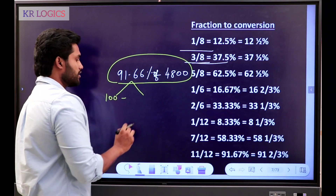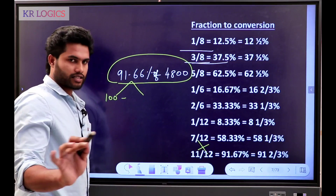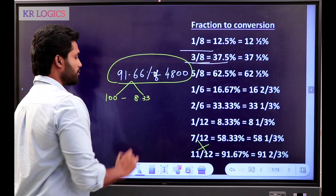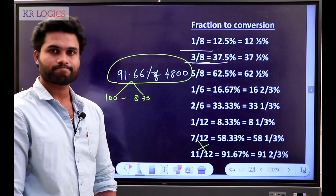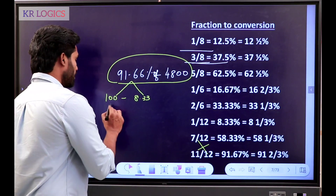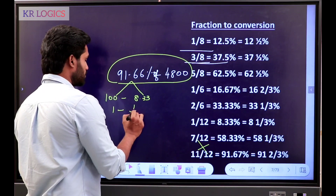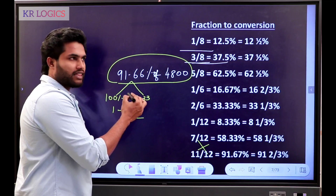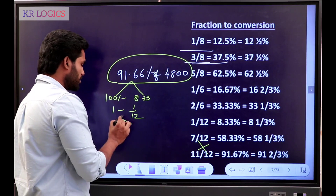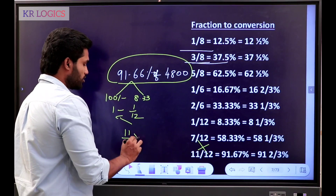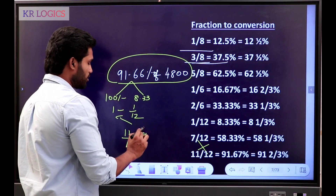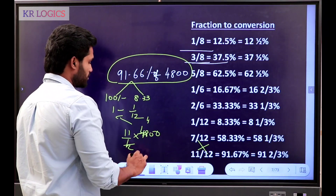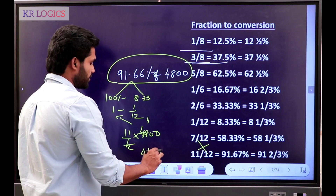100 minus 8.33 in split. How do we write? This is 1 minus 1 by 12. Because 100 percentage is 1 by 1 and 8.33 is 1 by 12. This is 11 by 12. So 11 by 12 of 4,800 — if you write — the answer is 4,400. That's the answer.